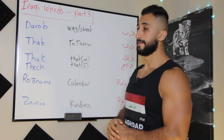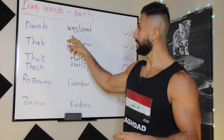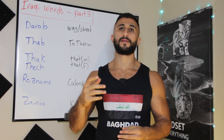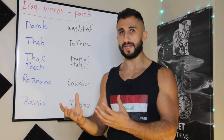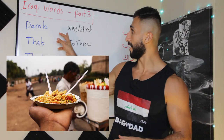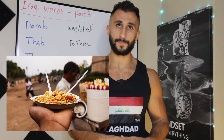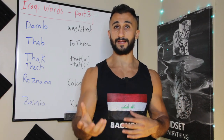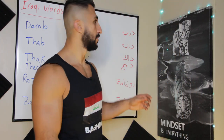The first word is 'darub.' Darub means way or street — mainly 'way.' For example: 'ghibli akil dar bak' — bring me food on your way. So like your mom telling you to bring food on your way. The plural of darub is 'daroob.'